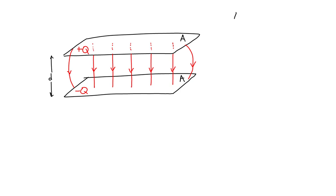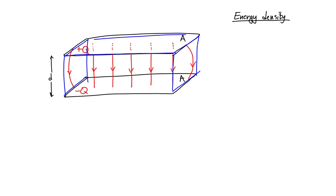Our goal is to find the energy density of this electric field. The electric field has the ability to give a charge potential energy. We can talk about the density of that energy over a volume of space. This energy density is a volume density over the volume in which the electric field is present. We signify that energy density with a lowercase u, corresponding to the energy stored by the capacitor over the volume of space the electric field occupies.